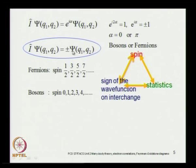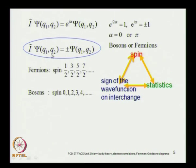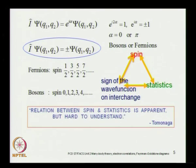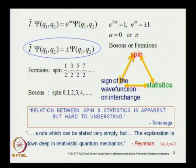It is very interesting that you have this connection between statistics, the spin of the particle, and the sign of the wave function on interchange. On interchange of Bose particles the wave function remains invariant, whereas on interchange of Fermi particles the geminal wave function changes sign. This connection is interesting, and as Tomonaga tells us, the relation between spin and statistics is apparent but hard to understand. As Feynman notes, the rule can be stated very simply but the explanation is complicated — it lies deep down in relativistic quantum mechanics.